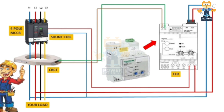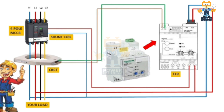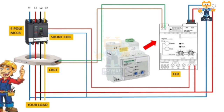The core balance current transformer will sense any leakage in the cable current. It measures the balance of the core — as the name suggests, core balance current transformer. If the balance of the core is not equal, the CBCT will activate and give a signal to the earth leakage relay.